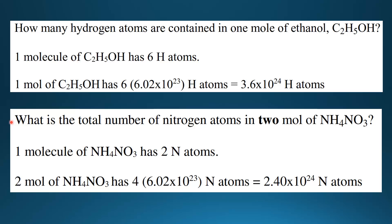Here we have another example. What is the total number of nitrogen atoms in two moles of NH4NO3, which is ammonium nitrate? One molecule of ammonium nitrate has two nitrogen atoms. So two moles of ammonium nitrate has four times Avogadro's constant — because we have two nitrogen atoms per molecule and the question asks for two moles — giving 2.40 times 10 to the 24 nitrogen atoms.